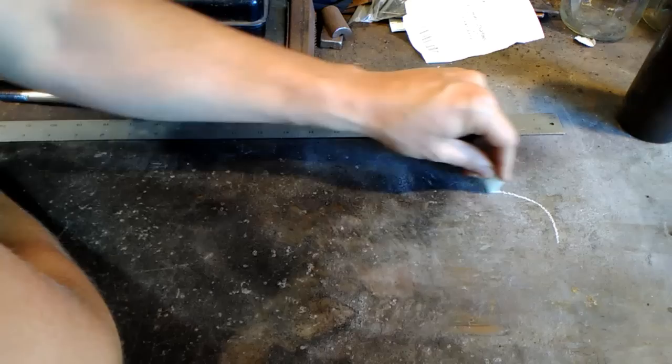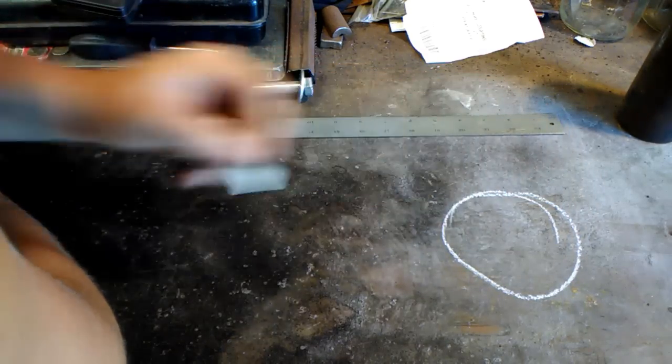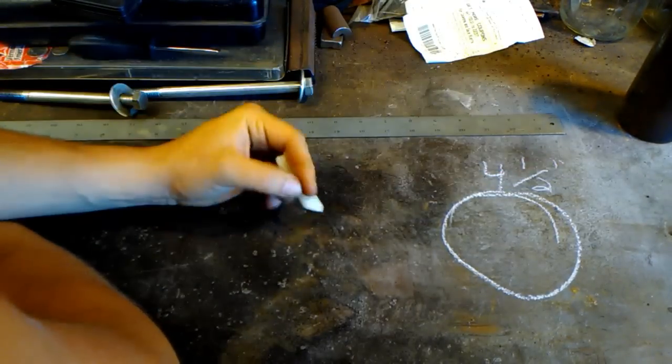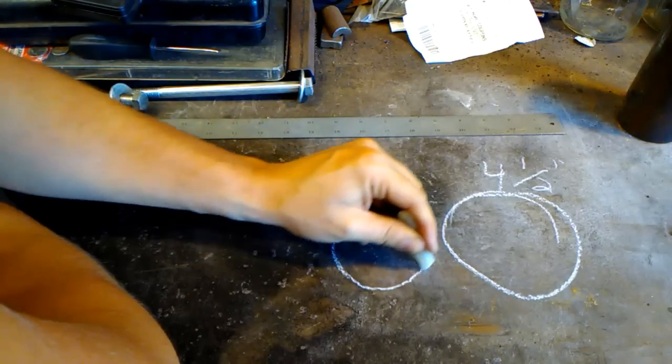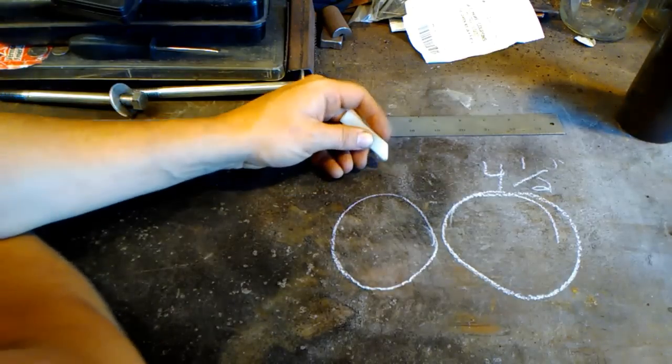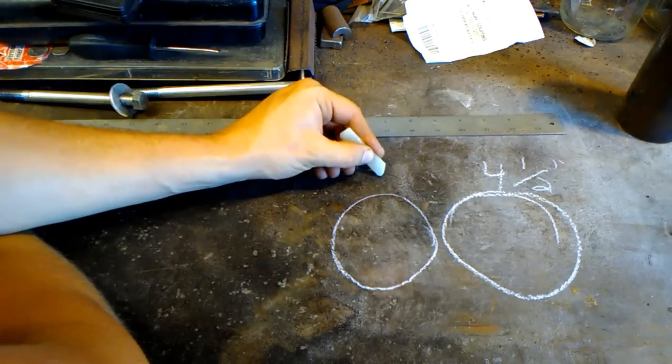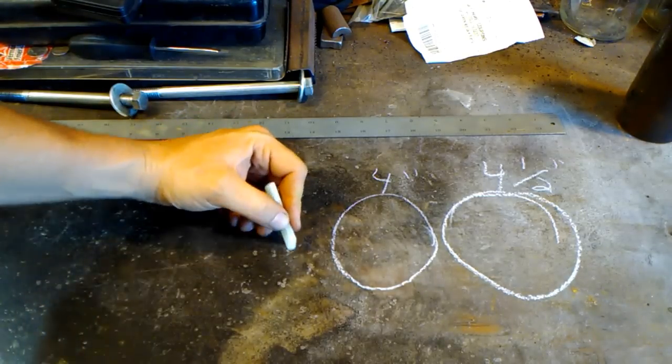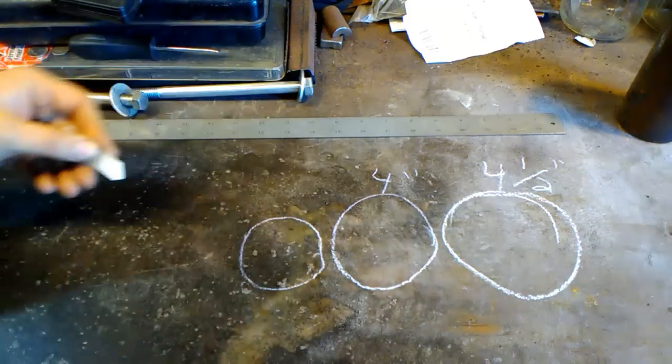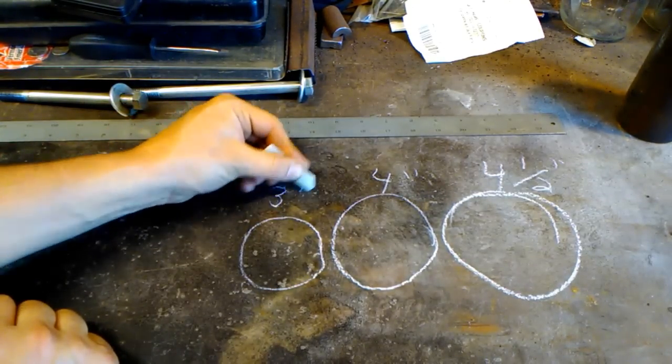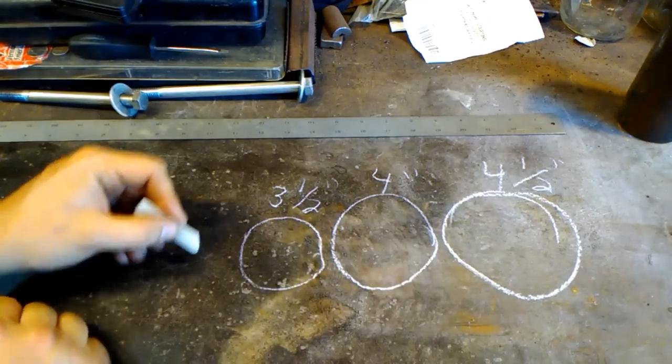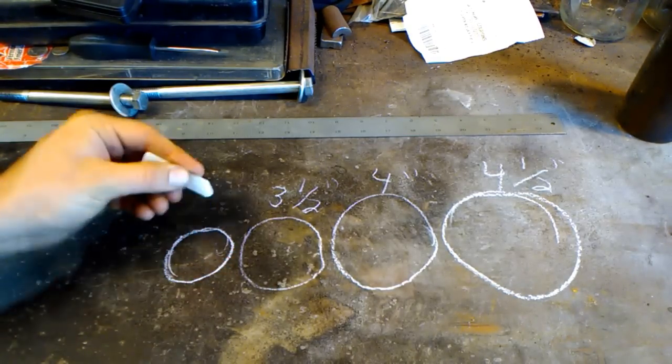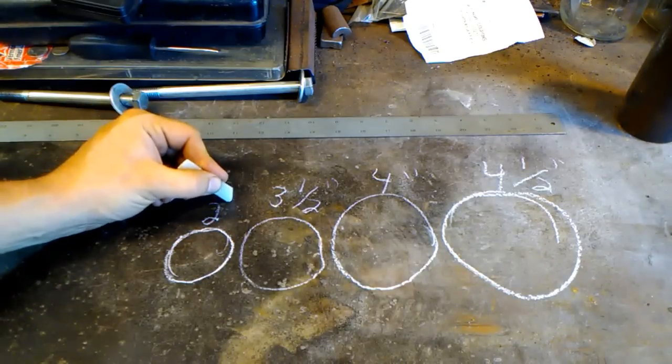So the sizes are going to go as follows. We're going to need one large blank that will be four and one half inches. We're going to need our slightly smaller medium-sized blank that is going to be four inches.